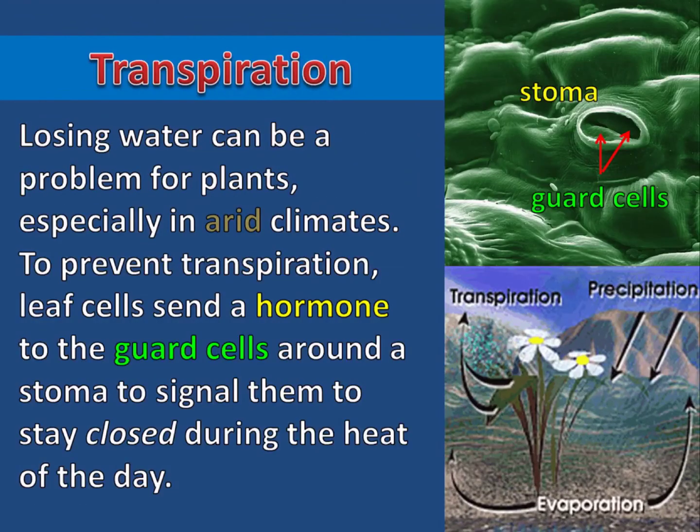Losing water can be a problem for plants, especially in arid climates like the desert. To prevent transpiration, leaf cells send a hormone to the guard cells around a stoma to signal them to stay closed during the heat of the day. This response allows plants to conserve water, which may be hard to come by in an arid climate.